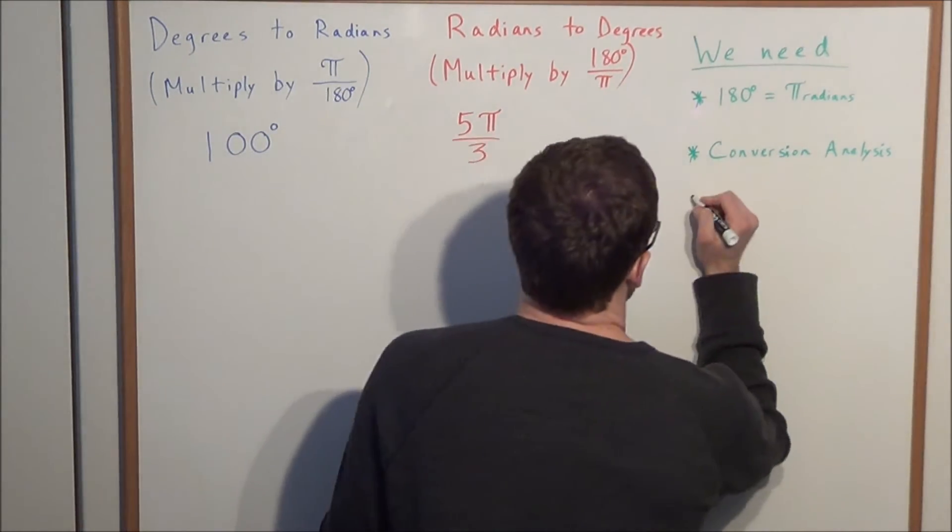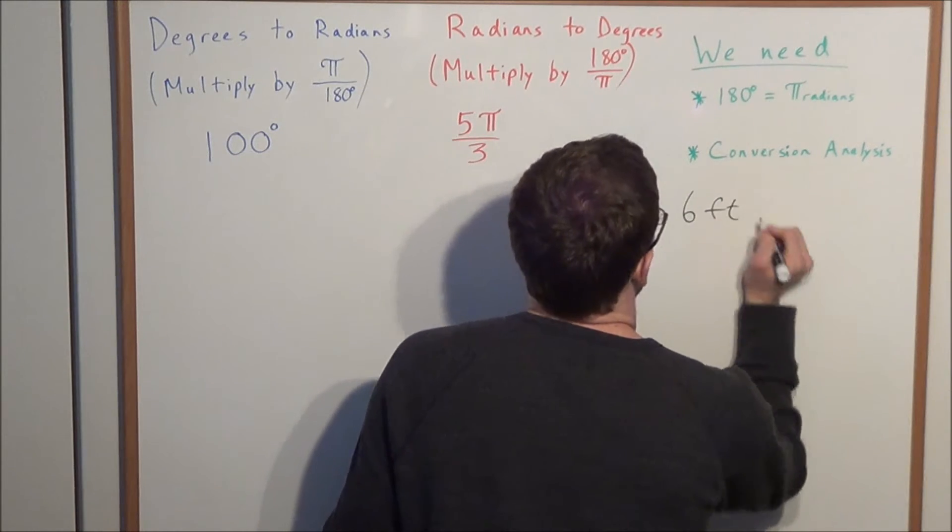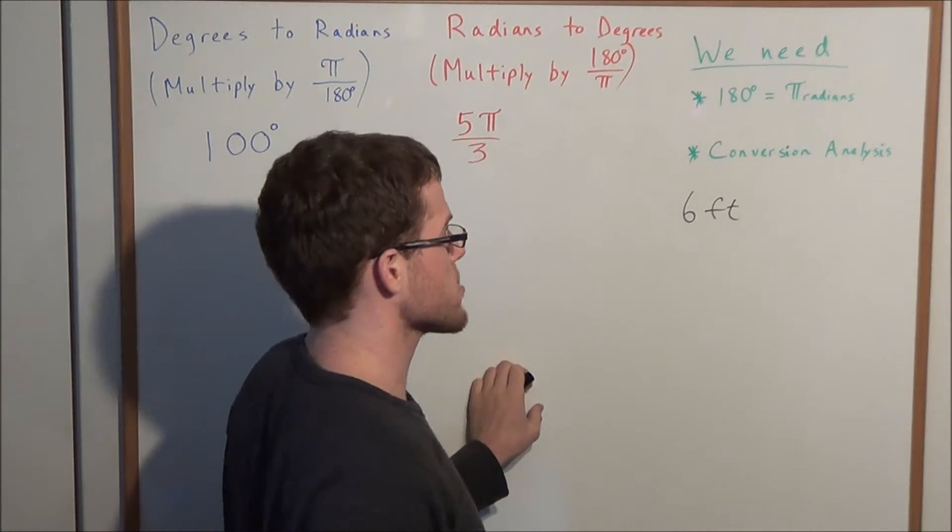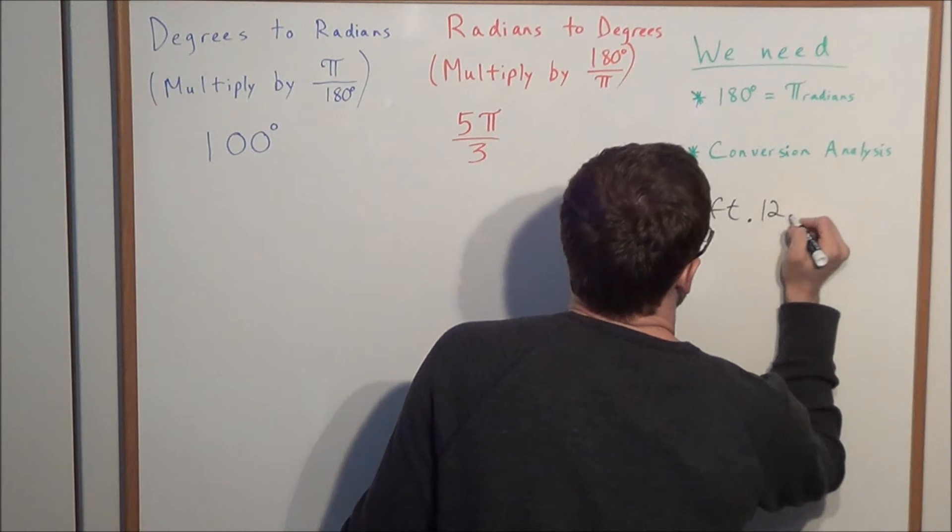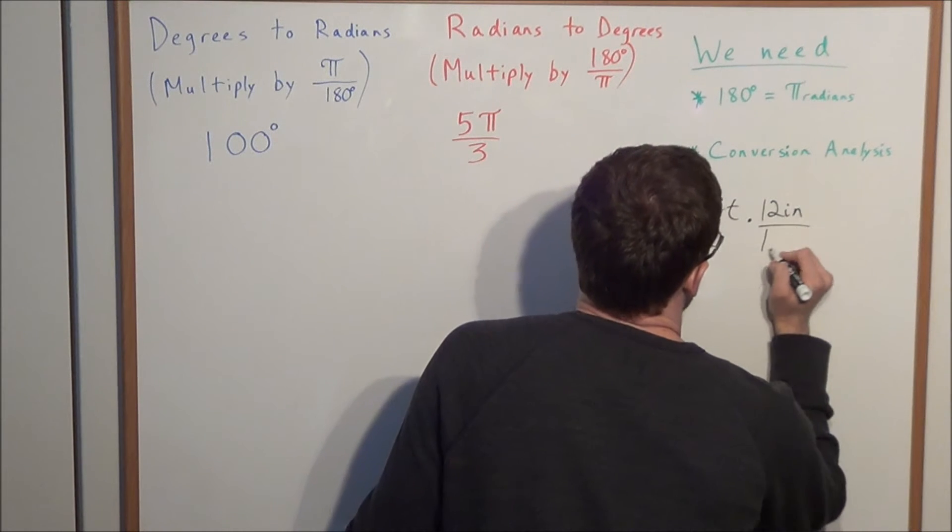Conversion analysis works like this: if we have a 6 foot man and we want to convert 6 feet to inches, we would multiply by 12 inches divided by 1 foot.